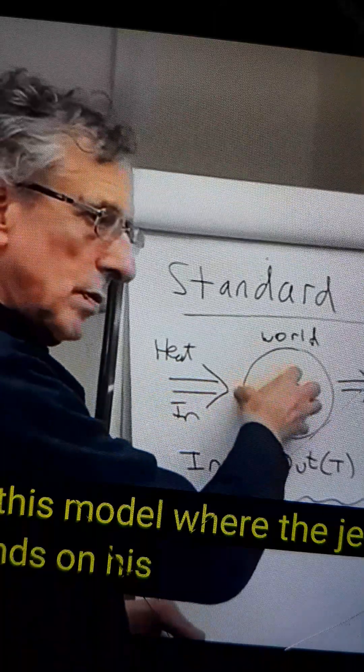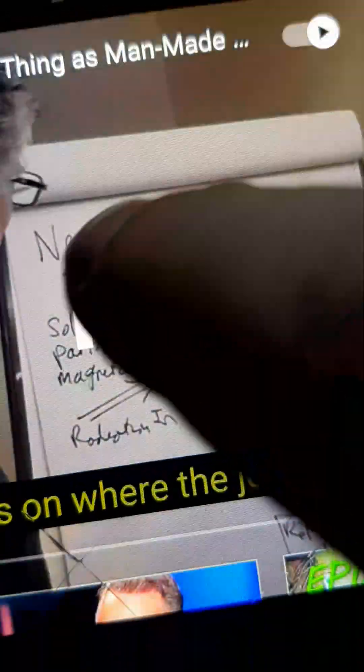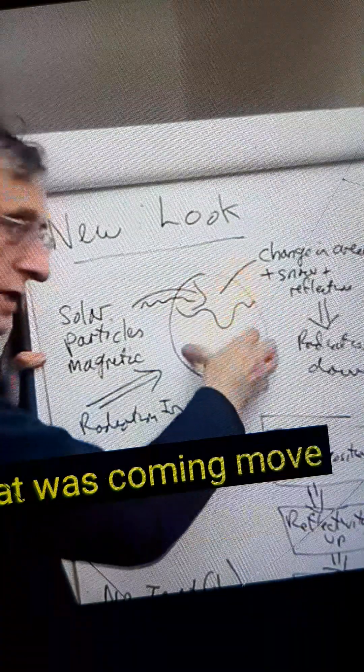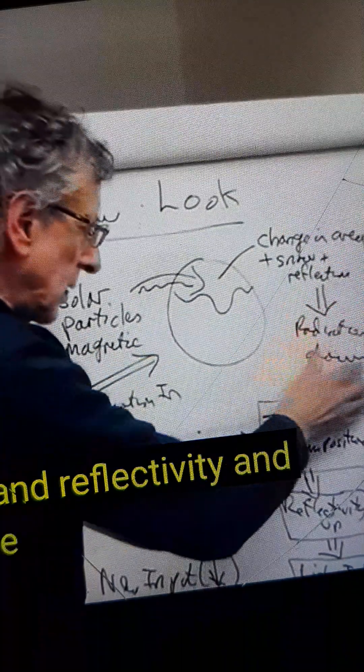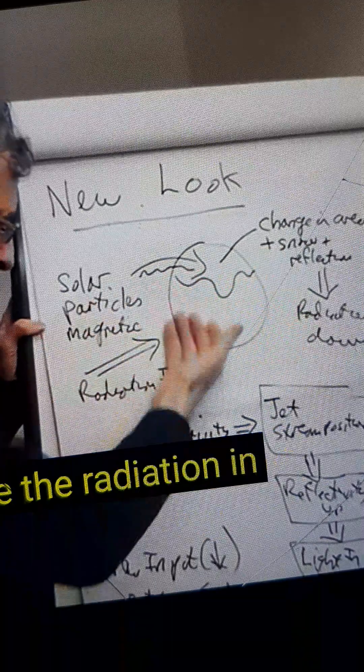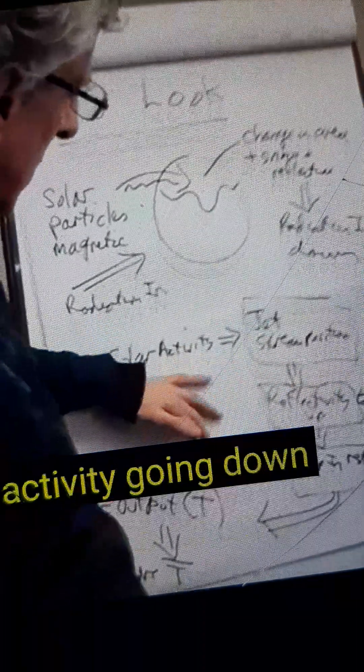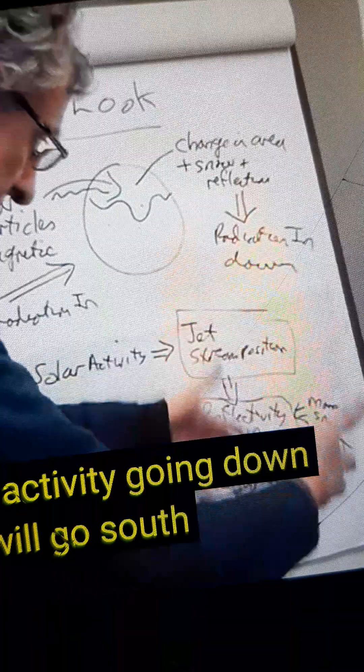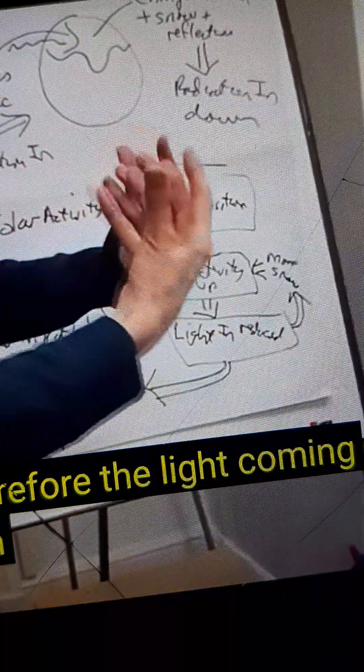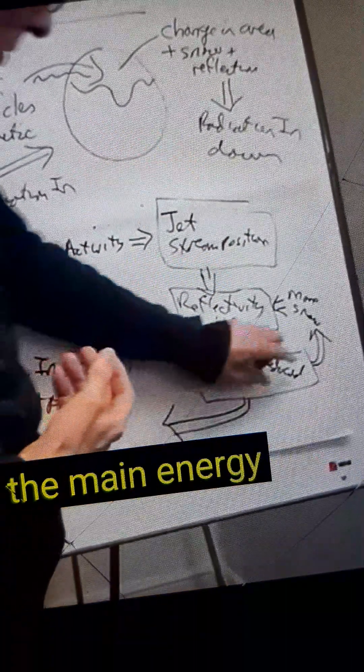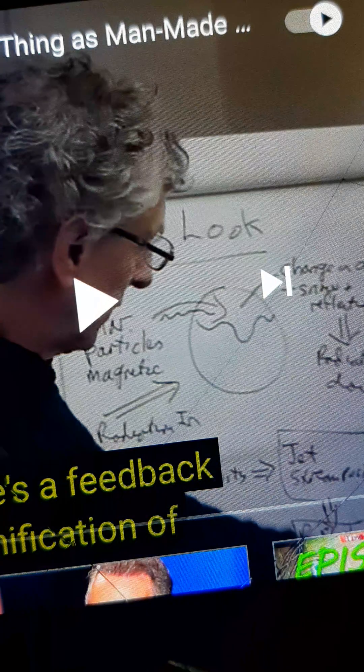You see, and in this model, where the jet stream is depends on this temperature. Whereas we say the temperature depends on where the jet stream is. So what actually is happening is solar particles come in, move the jet stream. And if the area goes up, there's more snow and reflectivity. And that will then reduce the radiation in. So it gets colder. So in the diagram, solar activity moves the jet stream. And in the case of solar activity going down, the jet stream will go south. And reflectivity will go up because there will be more snow. And therefore the light coming into Earth, the radiation, the main energy, will go down. And that will make even more snow. So there's a feedback mechanism, a magnification of it.